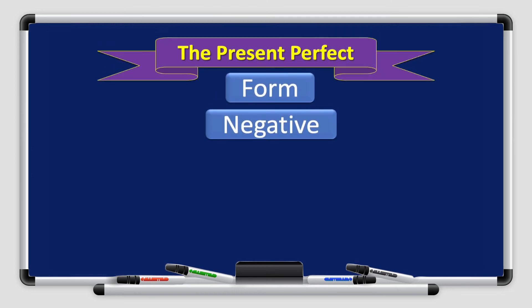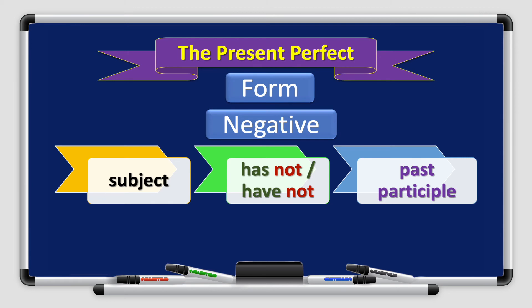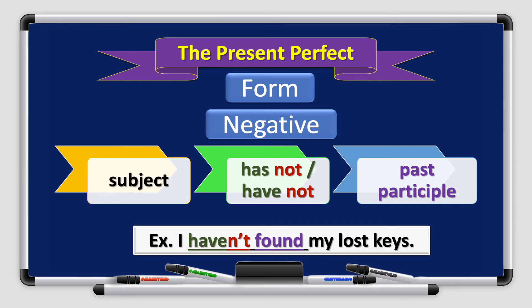What if I want to write a negative sentence? It's the same form, but I add one more thing. I add not after has or have. I start with the subject, followed by has not or have not, hasn't, haven't, followed by the past participle. For example, I haven't found my lost keys.